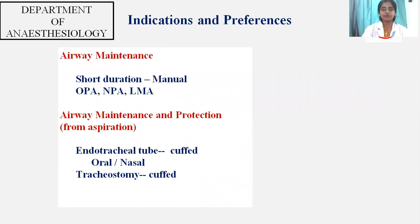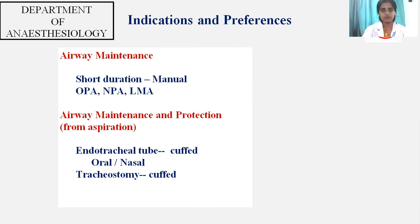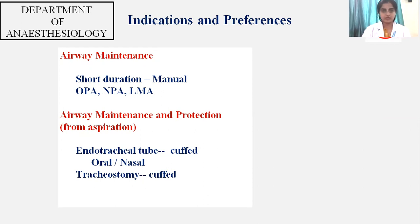What are the indications and preferences? When you want to maintain your airways for a shorter duration, you use oropharyngeal airways, nasopharyngeal airways, laryngeal mask airways, and manual methods including head tilt, chin lift, and jaw thrust. When there is a risk of aspiration and airway protection is needed, you use cuffed endotracheal tubes, which can be placed orally or nasally. The second option is a cuffed tracheostomy tube.